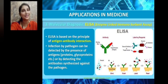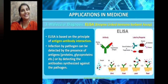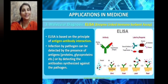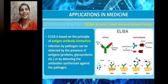So ELISA is based on antigen-antibody interaction to find out the presence of antigens or antibodies synthesized against the pathogen in a specific patient. That is the importance of ELISA and PCR in diagnosing a disease at its earliest stage so that fast treatment can be given.